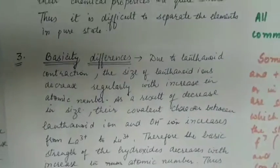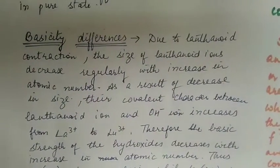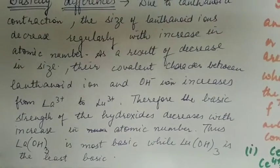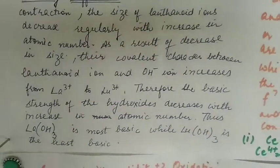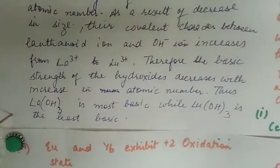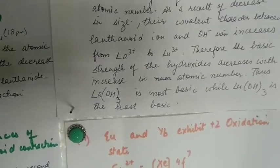Basicity difference: because size decreases as we go left to right, atomic number increases, size becomes smaller and covalent character increases. Thus, basic strength decreases. Lanthanum hydroxide is the most basic, and lutetium hydroxide is the least basic. So these are the consequences of lanthanoid contraction.